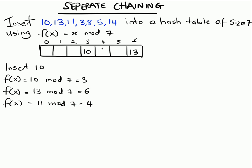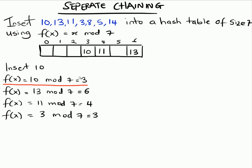Next we have 3 — 3 mod 7 is obviously 3, but look, we have a collision. 10 is already there. 10 mod 7 and 3 mod 7 hash into the same position, and this is where separate chaining comes into play.